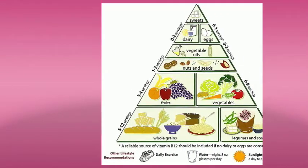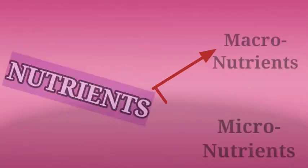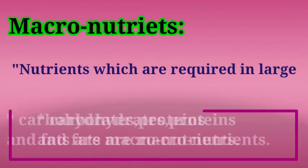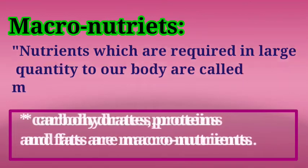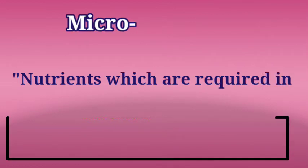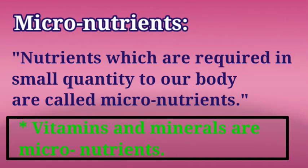We take several types of nutrients through food. They are classified into two main types. The first type is macronutrients — nutrients which are required in large quantity by our body. Examples are carbohydrates, proteins, and fats. The second type is micronutrients — nutrients required in small quantity, such as minerals and vitamins.